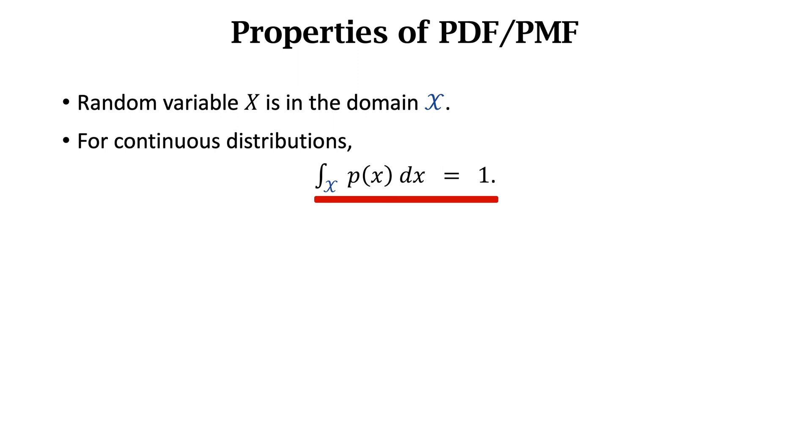Let's study a property of PDF and PMF. Denote the domain of random variable by the set big X. For continuous distribution, we can calculate the integral of the PDF p(x) on the set big X. The integral is equal to 1. For discrete distributions, we can take the sum of p(x) for all x in the domain. The sum is equal to 1.